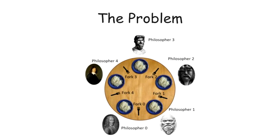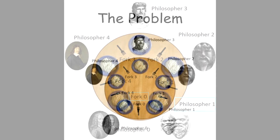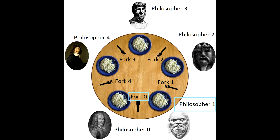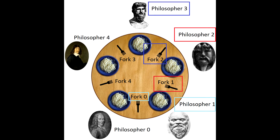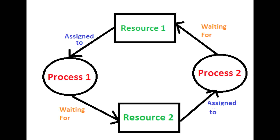So, where is the problem? Think about the case when all the philosophers are hungry and try to eat at the same time. Philosopher one takes fork zero, but just before he can take fork one, philosopher two takes fork one. Then just before philosopher two can take fork two, philosopher three takes fork two. It goes on like this for all of the philosophers, and in the end, each of the five philosophers has one fork and they all want the other. But none of them wants to give up the one he has, so each of them waits indefinitely and no philosopher can eat. This is a nice way of illustrating deadlock — a system state in which no progress is possible. Each part of the system requires a resource that another part is holding, and none of them is releasing the resource.